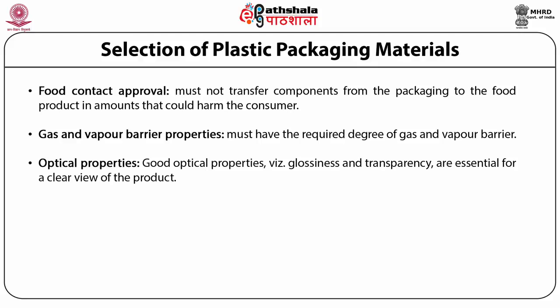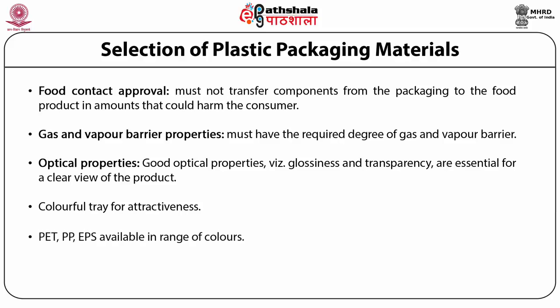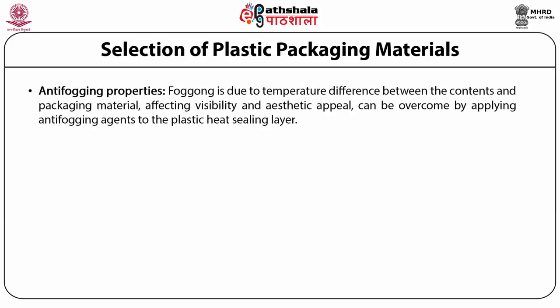Optical properties: good optical properties such as high gloss and transparency are essential for bag, pouch, and top web materials to satisfy consumer demand for a clear view of the product, to provide attractive appearance and shelf impact. Some base tray materials are available in various colors which enhance the visual appeal of the product. PET, PP, and EPS trays are supplied in a range of colors, while PVC trays are generally used in their natural form to provide a transparent pack.